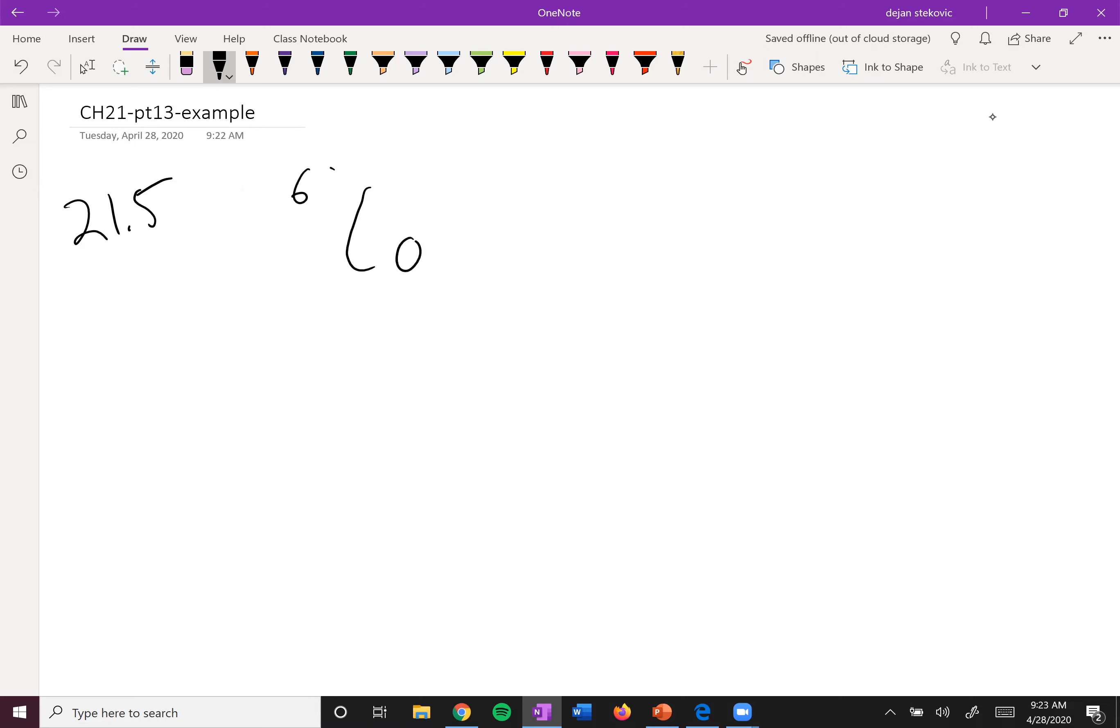According to this, cobalt-60 undergoes beta decay to turn into nickel-60 and emit an electron. The half-life of this is 5.27 years, so it takes 5.27 years for the concentration to half.